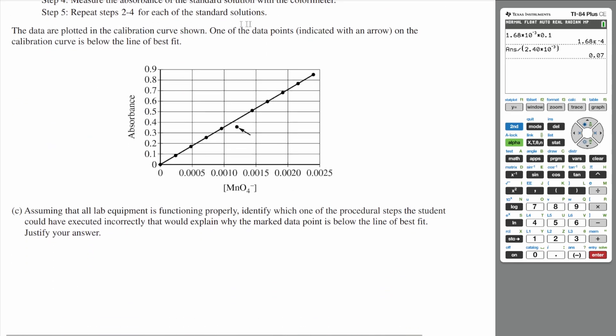The data are plotted in the calibration curve shown. One of the data points on the calibration curve is below the line of best fit. Assuming that all lab equipment is functioning properly, identify which one of the procedural steps the student could have executed incorrectly that would explain why the marked data point is below the line of best fit.